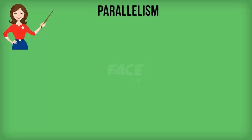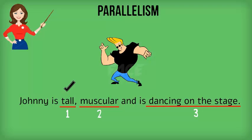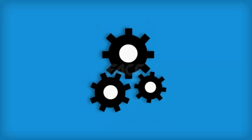Parallelism is a grammar error. Often our sentences include lists. If these lists are to be logical and readable, the items in them must be parallel with each other. That is, all the items in the list must be of the same logical and grammatical structure. Here is an example.